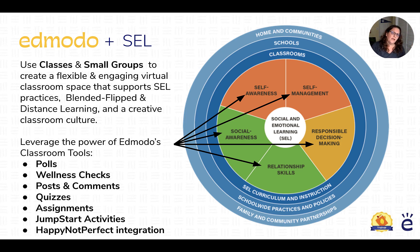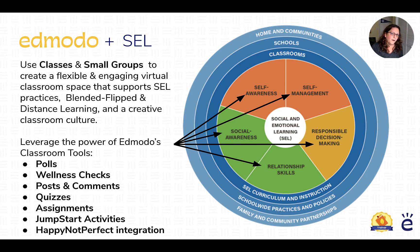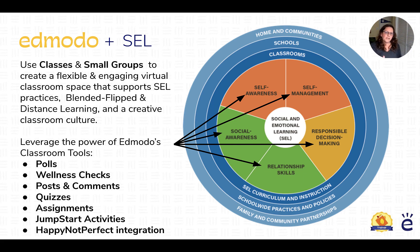To make this flexible, engaging classroom space, we can turn to social and emotional learning. The CASEL organization out of Chicago has come up with five core competencies to help educators align learning activities with SEL: self-management, self-awareness, social awareness, relationship skills, and responsible decision-making. This is something we want to build into our learning culture and do all the time, not just for an occasional special project. We can leverage Edmodo's classroom tools — polls, wellness checks, posts, comments, quizzes, assignments, gamified jumpstart activities, and mindfulness integration.